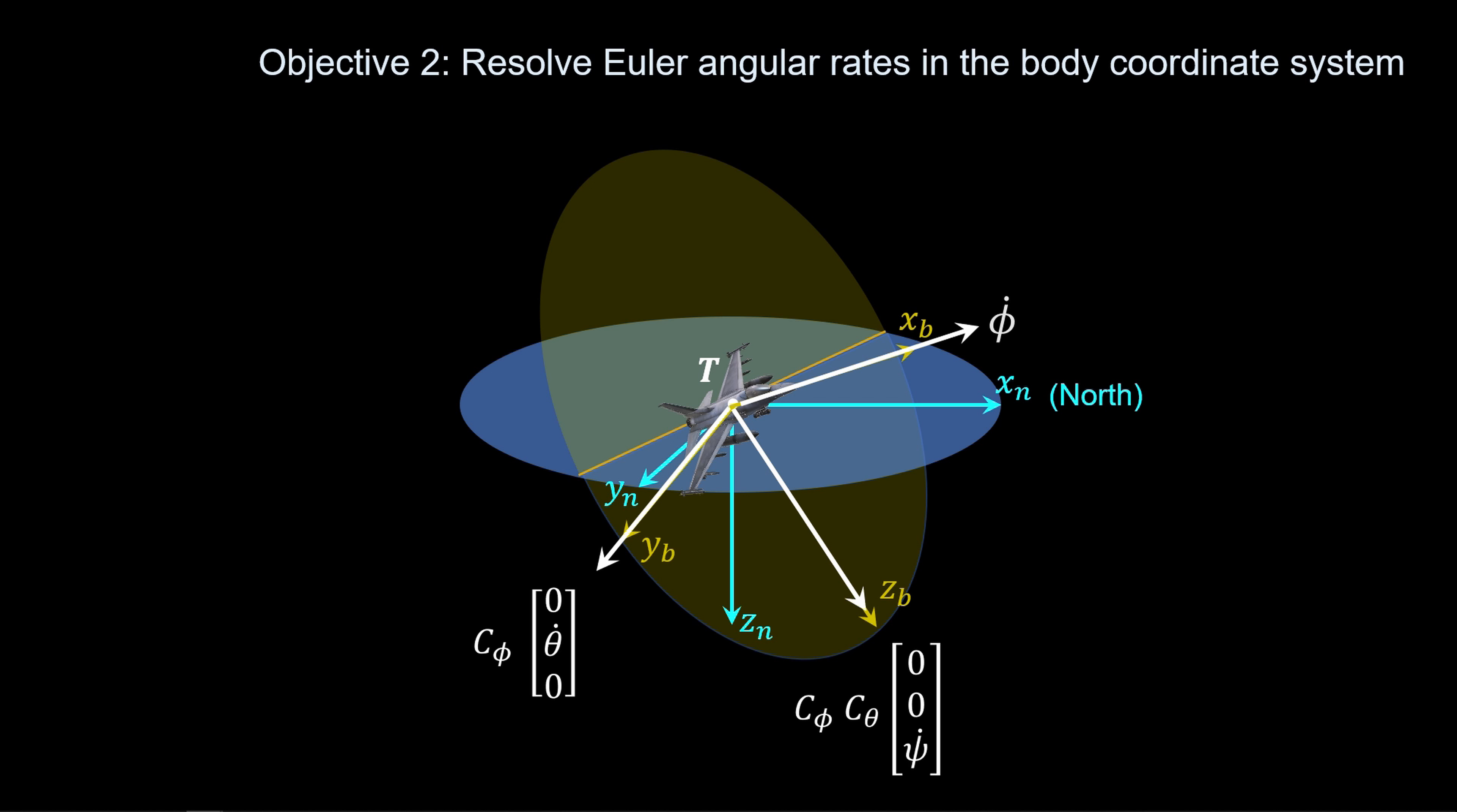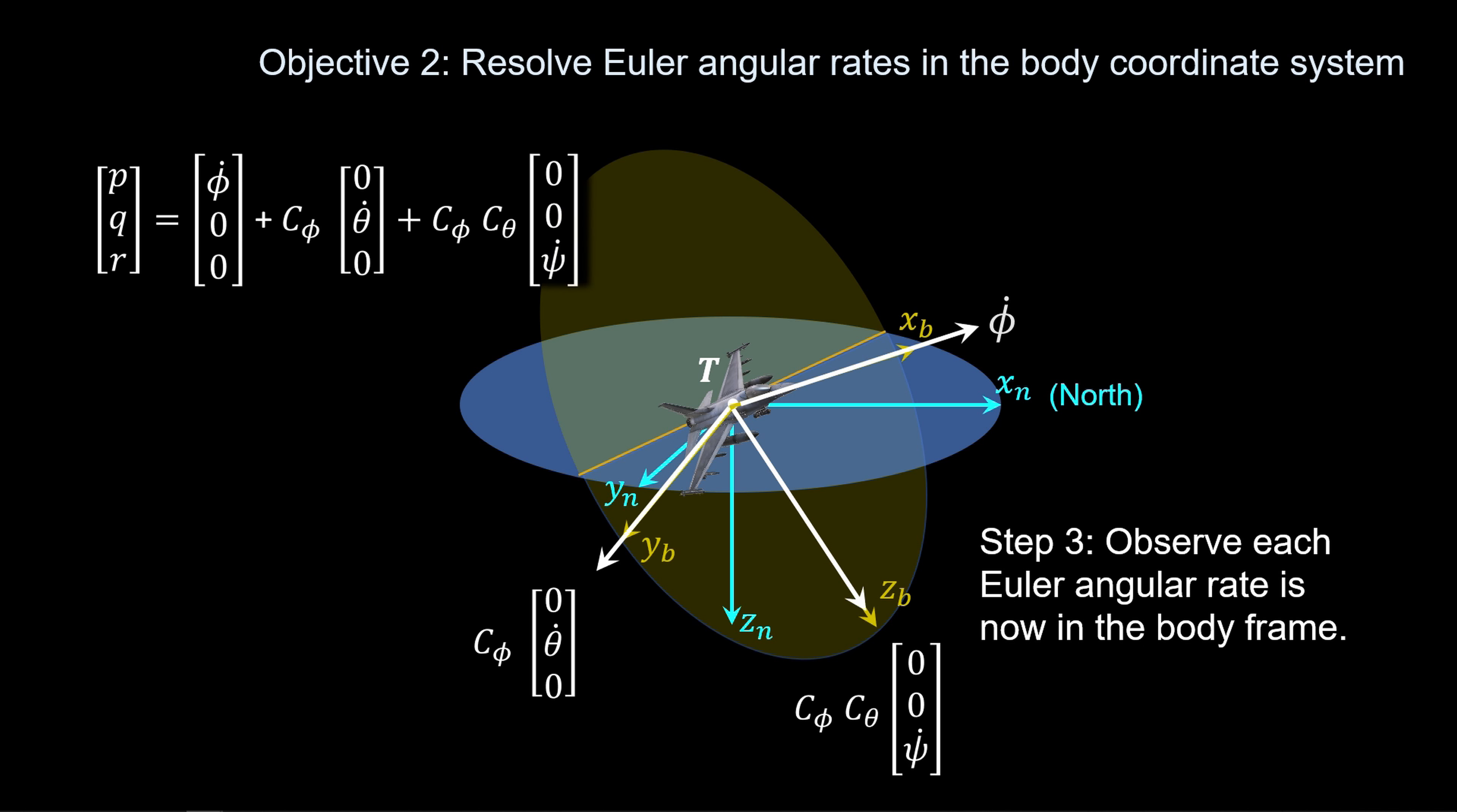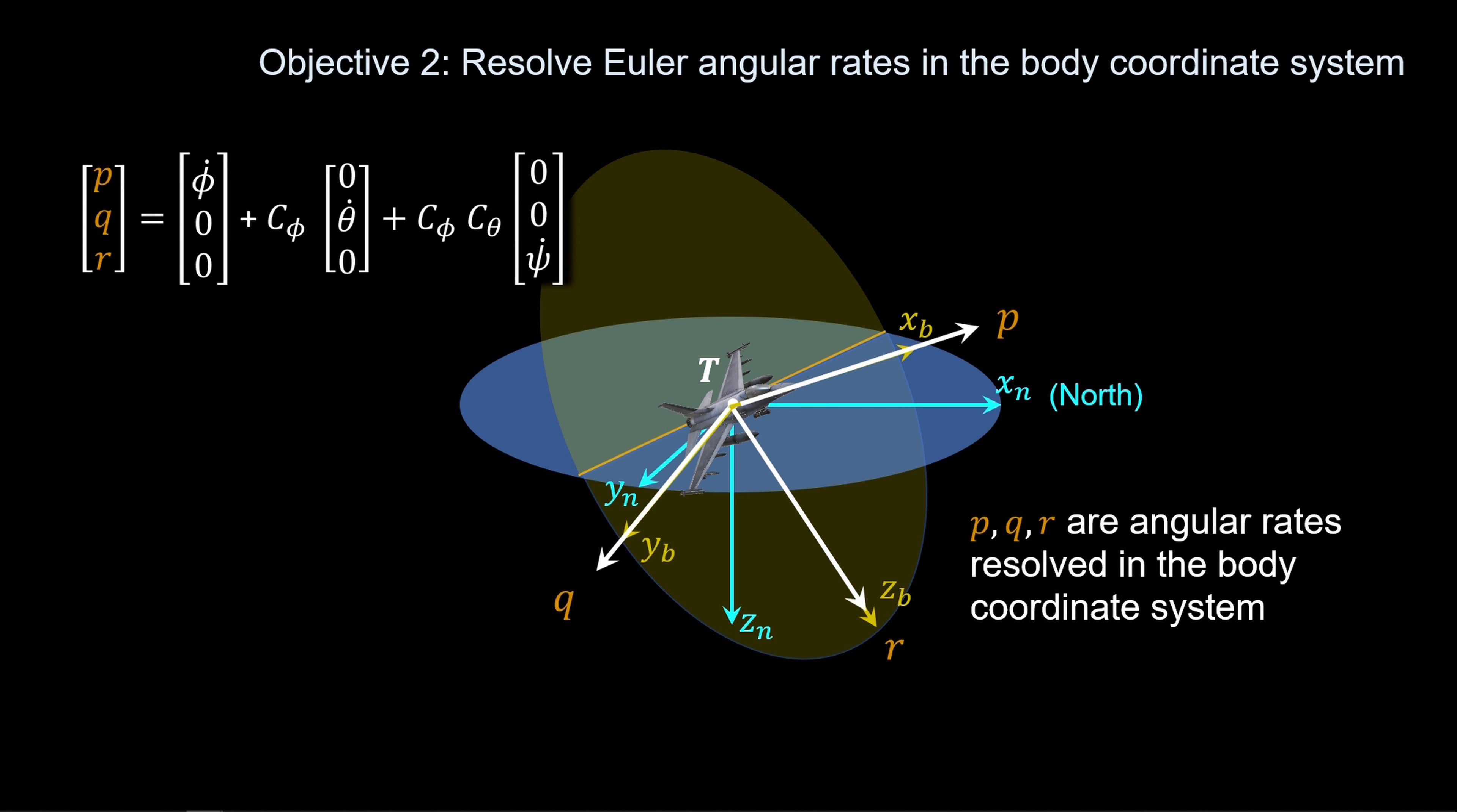Finally, we note that the roll rate, phi-dot, is already along the body coordinate X-axis, so we have the roll, pitch, and yaw angular rates in the body coordinate system. We simply add each element of the vectors together to form the body-resolved angular rate vector PQR. This accomplishes our second objective.